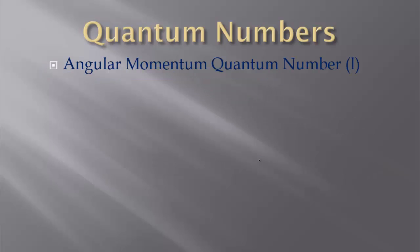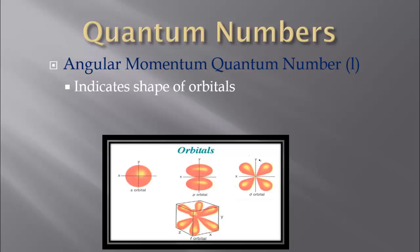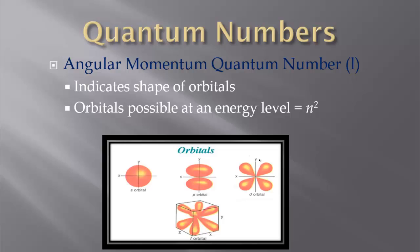The angular momentum quantum number is the second one, often given the symbol L. It tells us the shape of the orbital. These aren't nice orbits or nice circles, as you can see in the picture — they come in different shapes. Where that electron will be depends on this angular momentum quantum number, and how we get these shapes is all based on math. The orbitals possible at any energy level is N squared. So, N is your energy level and we square it to find the possible orbitals. At the first energy level, 1 squared is 1, so we have one possible orbital. At energy level 2, 2 squared gives us 4 possible orbitals.